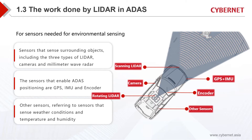According to different needs, LiDAR is basically divided into two categories: scanning LiDAR and rotating LiDAR. The GPS plus IMU inertia navigation and the encoder will assist to locate the position of the vehicle, receive reflection information, and do subsequent distance conversion. The surrounding system needs to be identified before it can pass to the sensor to guide the next step in autonomous driving.